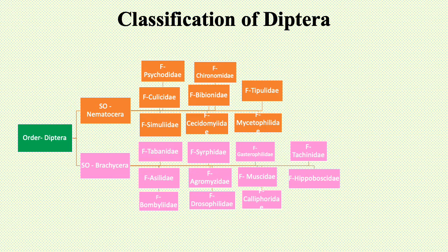Suborder Brachycera is divided into 11 families: Tabanidae, Asilidae, Bombyliidae, Syrphidae, Agromyzidae, Drosophilidae, Gasterophilidae, Muscidae, Calliphoridae, Tachinidae, and Hippoboscidae.